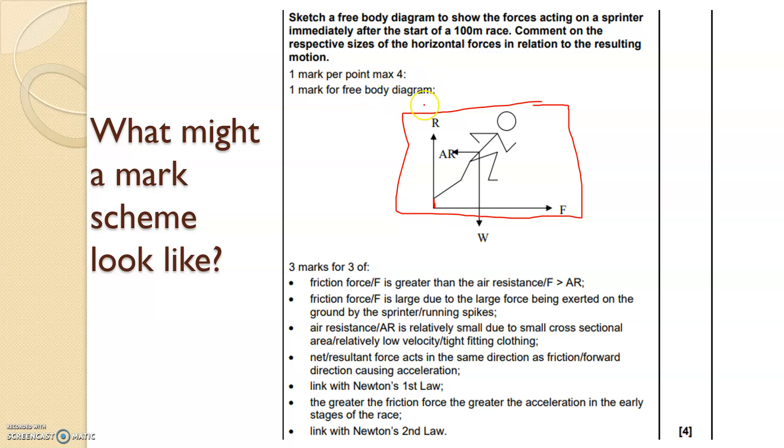One mark per max, four. One mark for the free body diagram. So you get one mark for that. Three marks for three of the following. Friction force F is greater. So this line here is greater than air resistance. Perfect, that's one mark. Friction force is large due to the large force being exerted on the ground. So if this is in contact, the foot is in contact with the ground, that is also another mark.